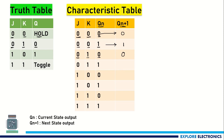So Qn+1, the next state, becomes 0. When J=0, K=1 is the input again and the current state of the output is 1, the output will again be 0 because J is equal to 0.